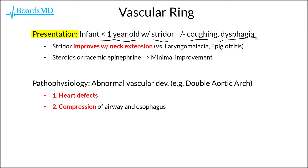One key differentiator of the vascular ring clinically, relative to some of the other causes of stridor, is that the stridor is ultimately going to improve with extension of the neck. This is in contrast to other conditions such as laryngomalacia as well as epiglottitis, which are not going to improve with such a maneuver.